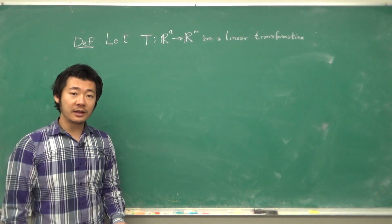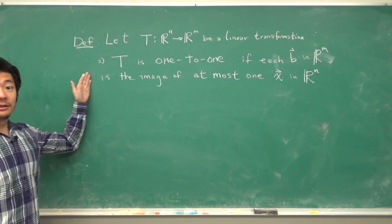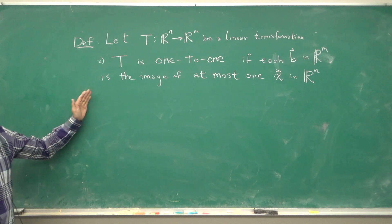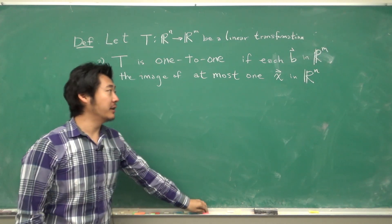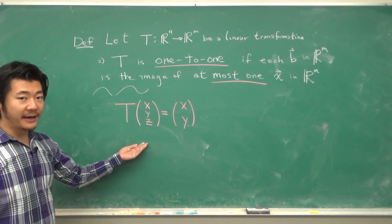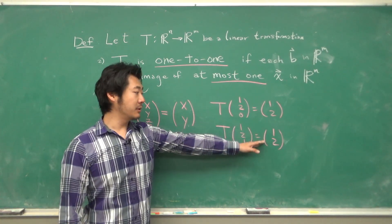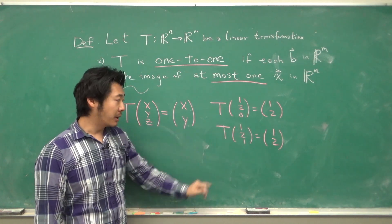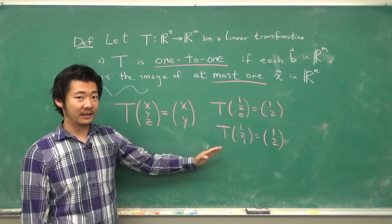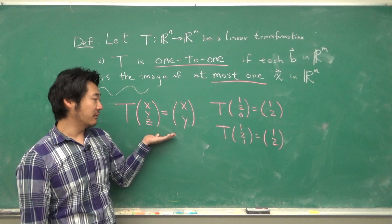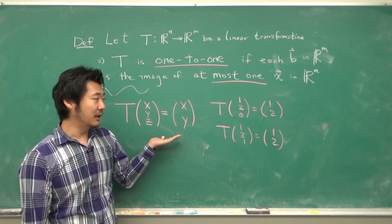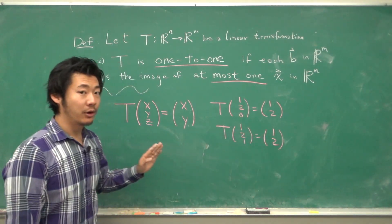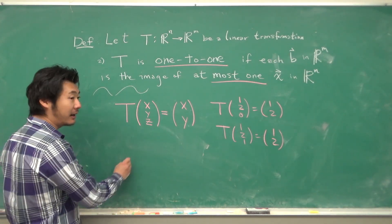Another concept is that T is 1-to-1 if each B in Rm is the image of at most one X in Rn. Going back to the earlier example, (1, 2) was the image of (1, 2, 0) but also (1, 2, 1), and in fact there would be infinitely many vectors that map to (1, 2). So that transformation is not 1-to-1.